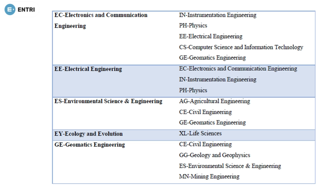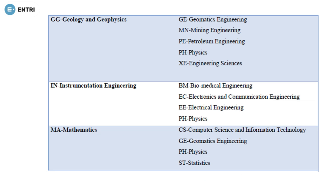If you are choosing Ecology and Evolution as your primary paper, there is only one option for your secondary paper: Life Sciences. For Geomatic Engineering, you can choose Civil Engineering, Geology and Geophysics, Environmental Science and Engineering, and Mining Engineering. If you are from the Geology and Geophysics department and choose it as a primary paper, you can choose secondary papers: Geomatic Engineering, Mining Engineering, Petroleum Engineering, Physics, and Engineering Sciences.